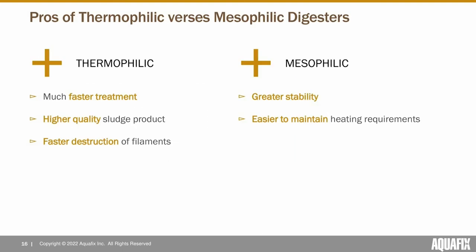A couple of notes about thermophilic versus mesophilic digesters. Thermophilic offers faster treatment, higher quality sludge products — the only way to effectively produce Class A sludge is using a thermophilic digester. Thermophilic digesters also do a better job breaking down waste-activated sludge filaments with limited foaming; in mesophilic systems the filaments can hang around for about a month causing repeated foaming events. But mesophilic digesters have greater stability, require less energy for heating, and are easier to maintain. If you have a stable waste stream, thermophilic digestion can speed up treatment, but for variable waste streams, mesophilic is usually the better option.